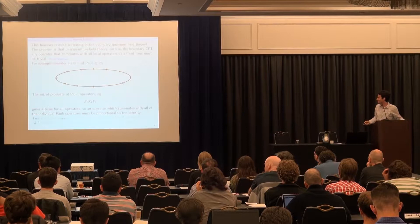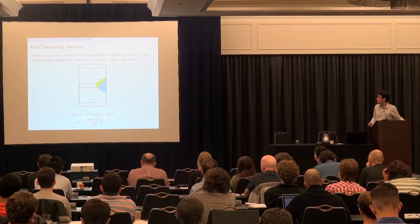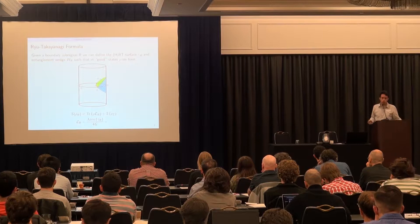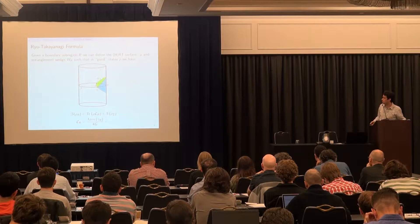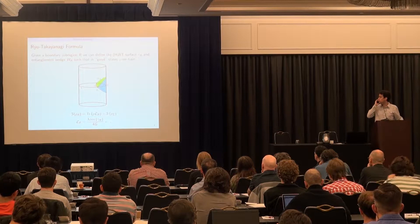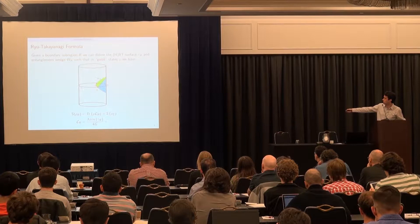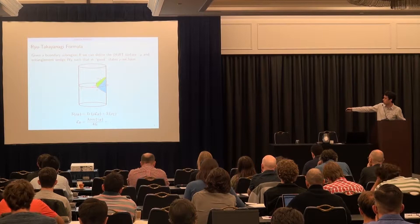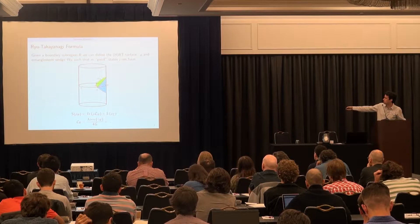Somehow holography has to solve this problem. Another feature of the correspondence is the Ryu-Takayanagi formula. Consider a time slice of the boundary theory sigma, and within it a subregion R. As in the spin chain, we can think of this subregion as corresponding to a tensor factor in the Hilbert space, and given a state rho, we can compute the von Neumann entropy of that state on that tensor factor.